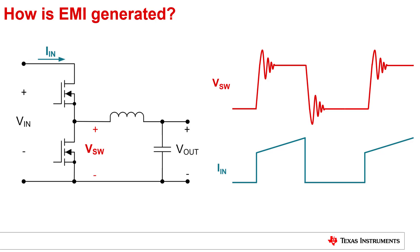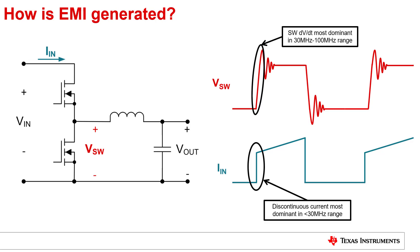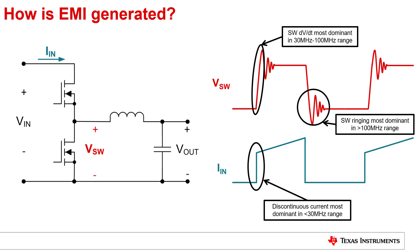While the discontinuous currents impact EMI in the sub-30 megahertz bands, the fast edges of the switching node and the ringing impact EMI in the 30 to 100 megahertz and the greater than 100 megahertz bands respectively.